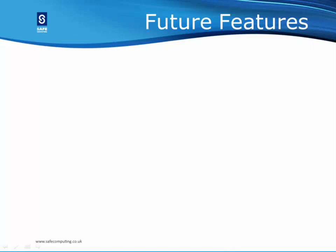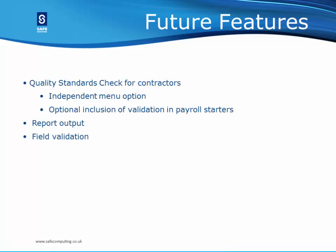Future features: following this development release, we will be providing a quality standards check for contractors, checking for missing or invalid data for the output of the EIR report. There will be a separate menu item as well as the option to include the validation within payroll starters. We will also produce the report output in CSV so that users can then upload to the HMRC. From statutory release 2016, we will be applying further screen validation for contractors so that data errors can be dealt with at point of entry, allowing customers to ensure that processes have been changed prior to the validation being introduced.